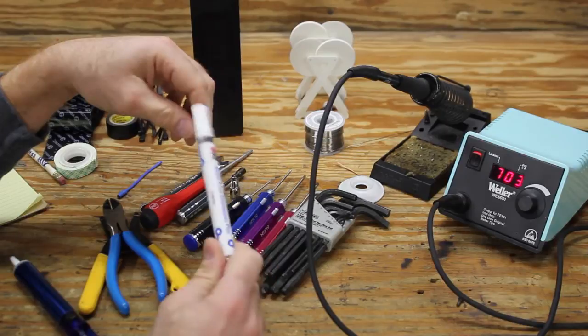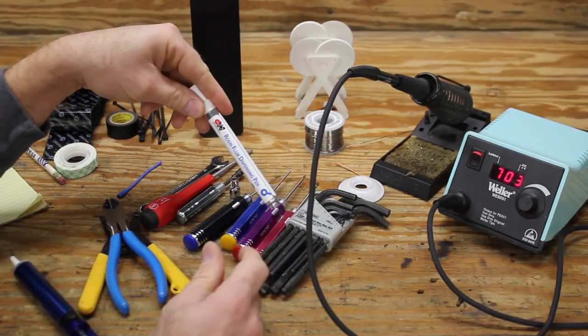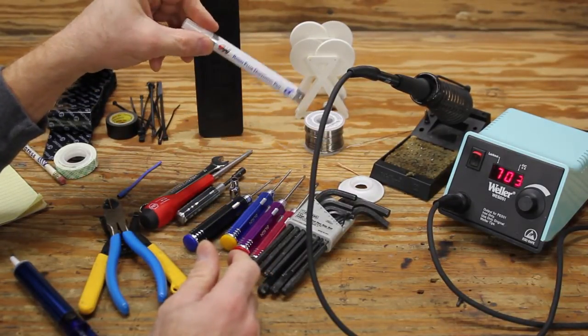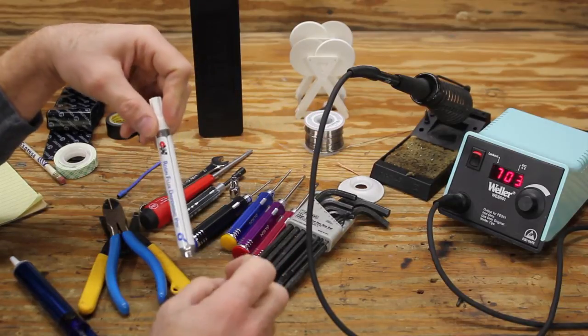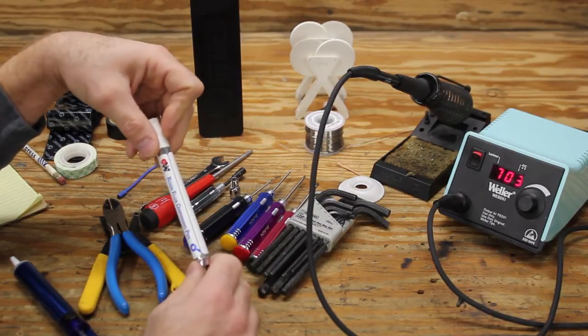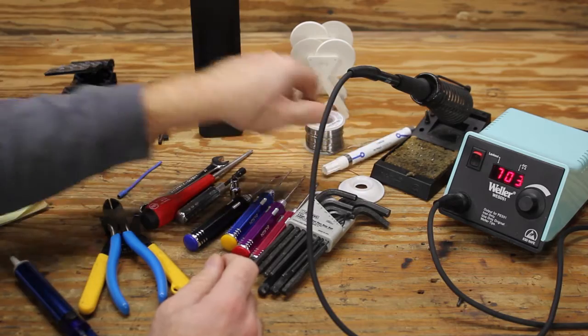You just rub the surfaces with your rosin pen and it does the trick. It makes the joint clean, allows the solder to flow. It doesn't clump or stick to the tip of your soldering iron. So that's very handy to have.